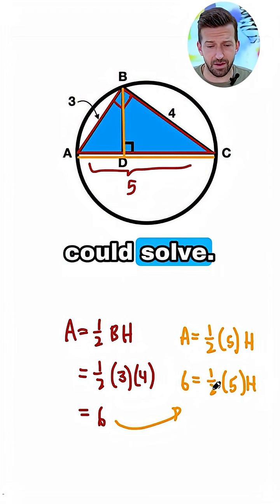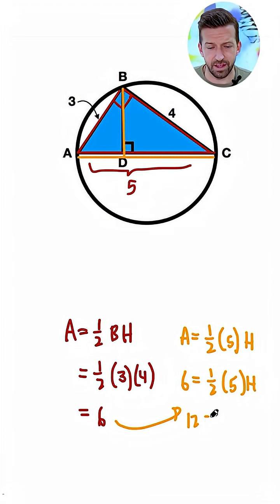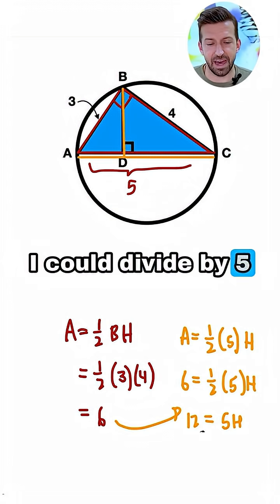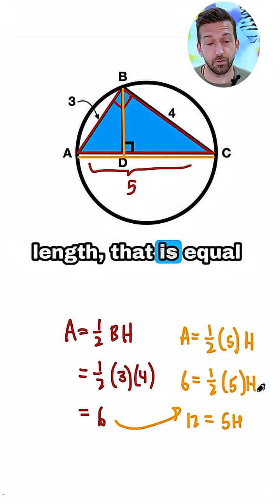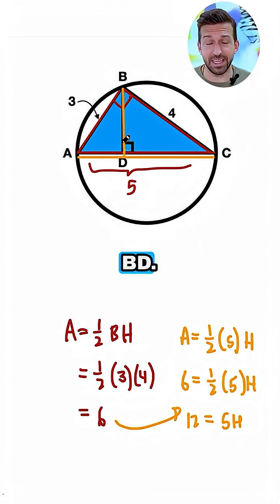So we could say that 6 equals 1 half of 5 times the height. This is a simple equation we could solve. I'll multiply by 2, I get 12. 12 equals 5H. I could divide by 5, and now I get 12 fifths, some fractional length. That is equal to the height of this triangle, and that is segment BD.